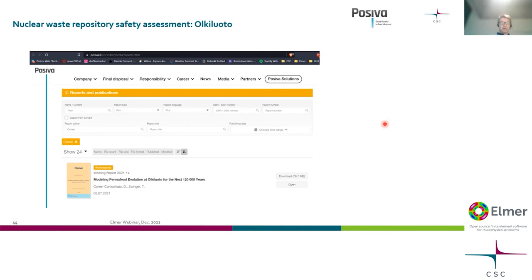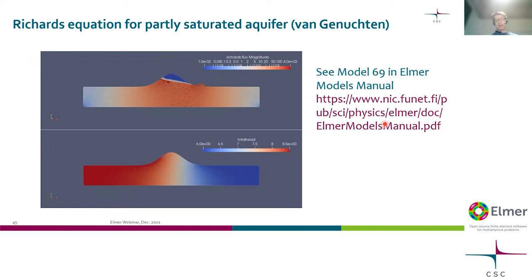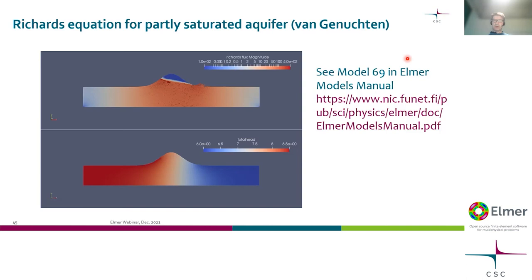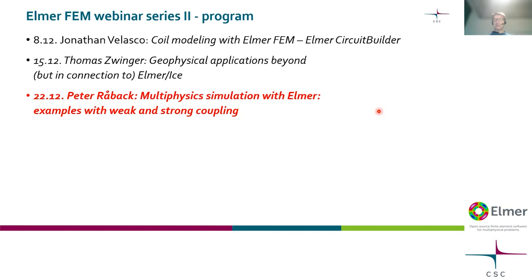Finally, there is also an implementation of the Richards equation in Elmer using internal relations, with two test cases available in the source code. You can also check it out as model 69 in the Elmer Models Manual, linked from the general Elmer webpage.